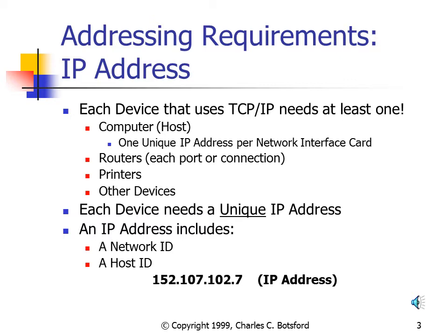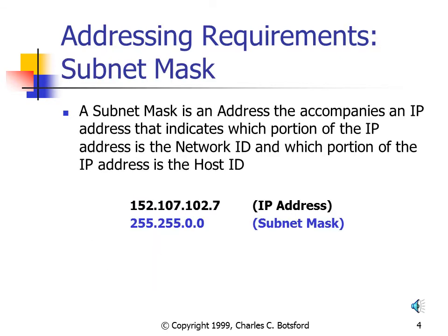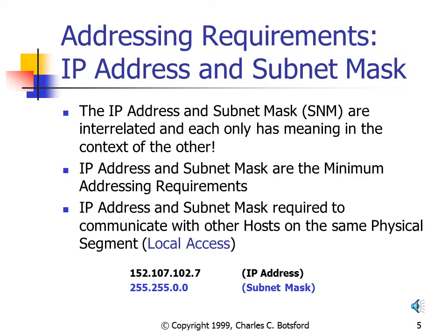The Subnet Mask is an address that accompanies the IP Address and it indicates which portion of the IP Address is the Network ID and which portion is the Host ID. Exactly how it does that is a little involved and we'll cover that in detail in a later section. It's important to realize that the IP Address and Subnet Mask are interrelated and each only has meaning in the context of the other. The IP Address and Subnet Mask are the minimum addressing requirements.